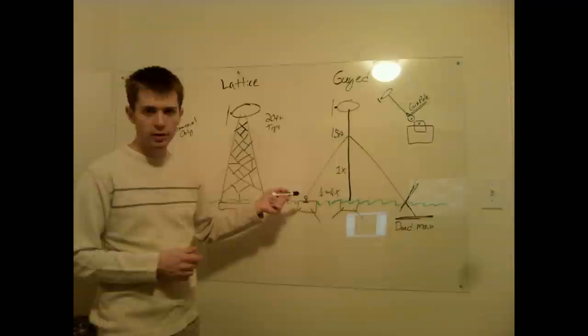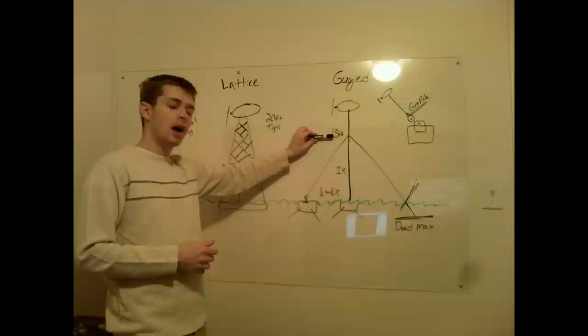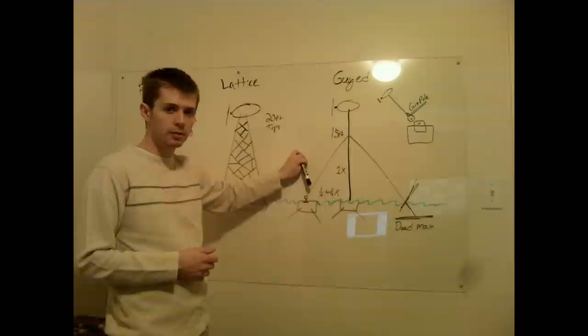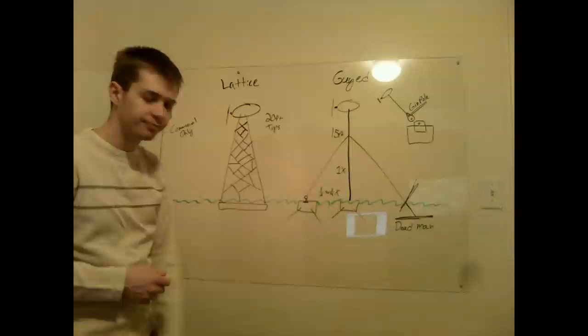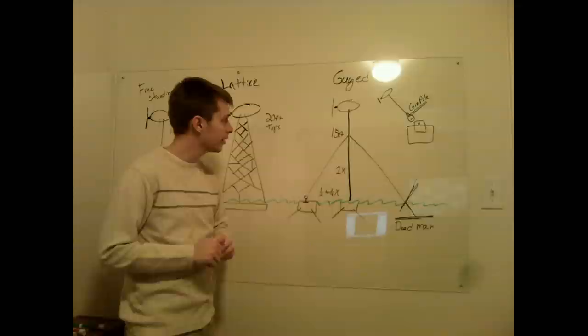A general rule here, for every one X up, go one and a half to three quarters X out. So if I've got my guy wires at 10 feet, I'm going to want to put my mounting someplace between five and seven and a half feet. Again, so if I go up to 30 feet, then I'm going to be quarter out to here.